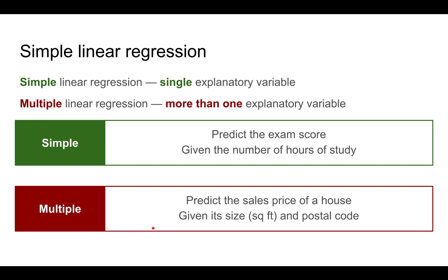We'll first start with simple linear regression where there's only a single explanatory variable, and later we'll talk about multiple linear regression where there's more than one. The reason it's nice when you have a single explanatory variable is you can plot the y against the x, and it's easier to visualize that way. A simple linear regression model might be predicting the exam score given the number of hours of study—so one variable.